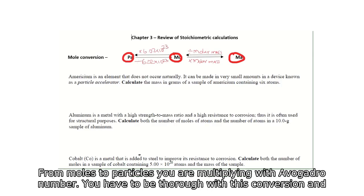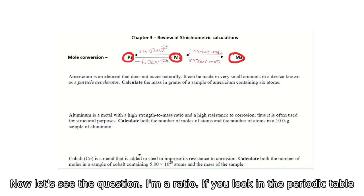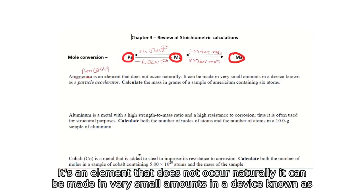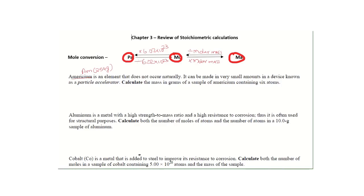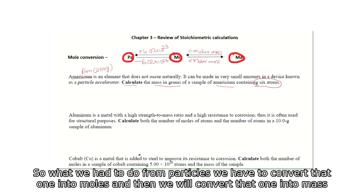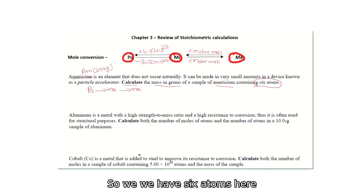You have to be thorough with these conversions. Now let's look at the question on americium. In the periodic table, the symbol is Am and the molar mass is 254 grams. It is an element that does not occur naturally — it can be made in very small amounts in a device known as a particle accelerator. Calculate the mass in grams of a sample of americium containing six atoms. They gave you the particles, so we convert particles to moles, then moles to mass.